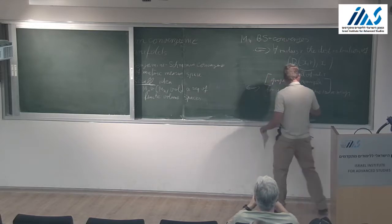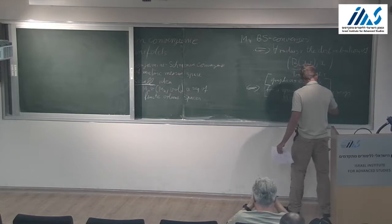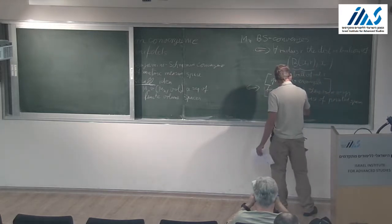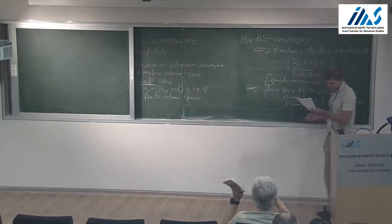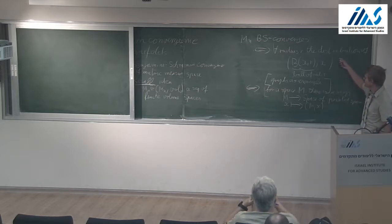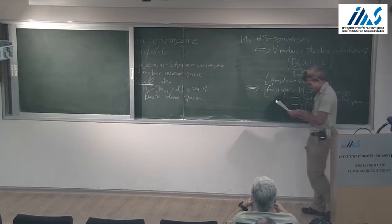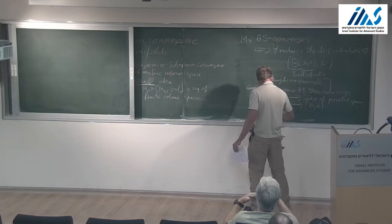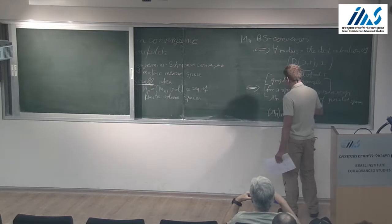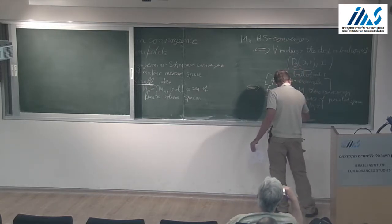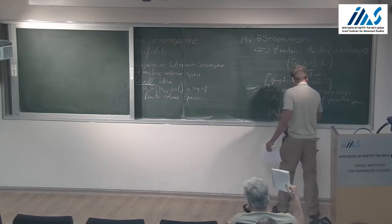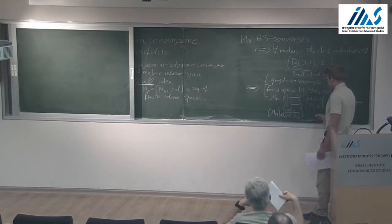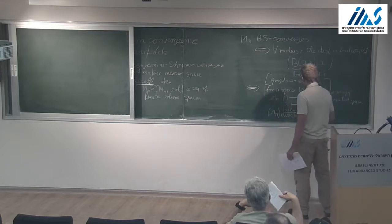You can map from M to a space of pointed spaces, where you map each point to a copy of the space pointed at that point. You can state the above without requiring any radius by saying: I have this map, call it mu_M, and now I can push forward this volume measure. The volume measure was finite so I can normalize it. I have a probability measure for each N — if this sequence converges in law then I say that the sequence Benjamini-Schramm converges.